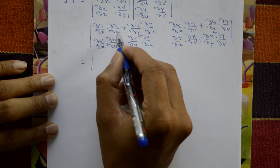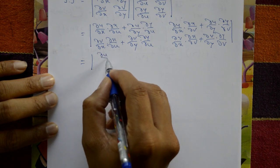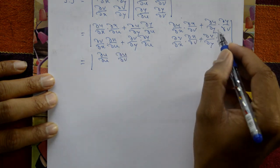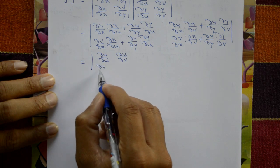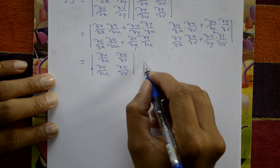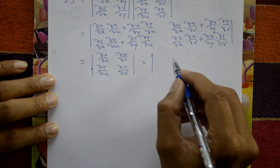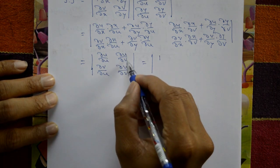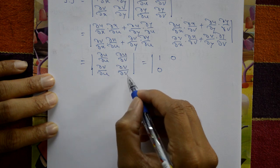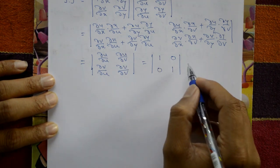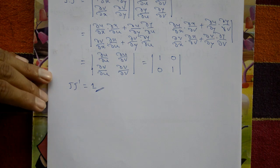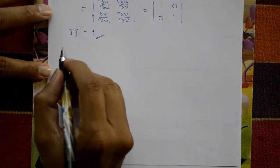Now simplifying: ∂u/∂x · ∂x/∂u + ∂u/∂y · ∂y/∂u = ∂u/∂u = 1; ∂u/∂x · ∂x/∂v + ∂u/∂y · ∂y/∂v = ∂u/∂v = 0; ∂v/∂x · ∂x/∂u + ∂v/∂y · ∂y/∂u = ∂v/∂u = 0; and ∂v/∂v = 1. So the determinant becomes the identity matrix, giving J × J' = 1.